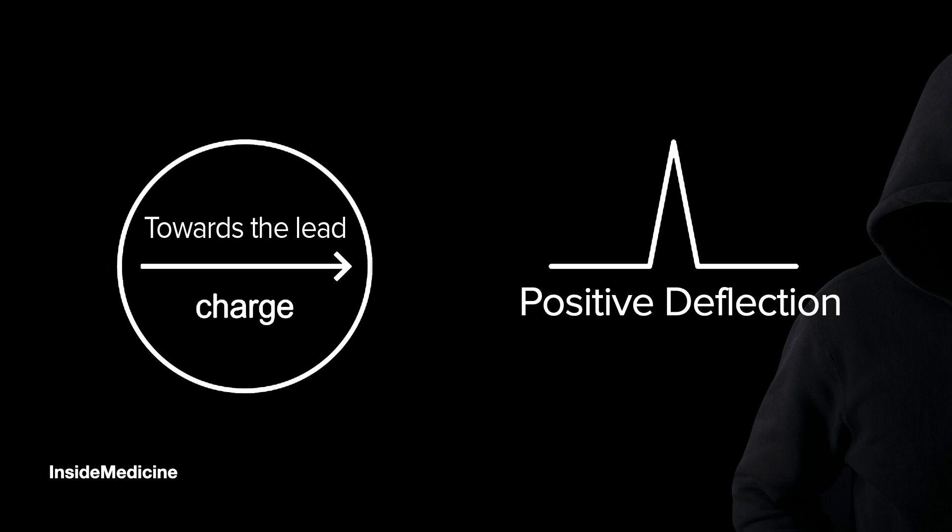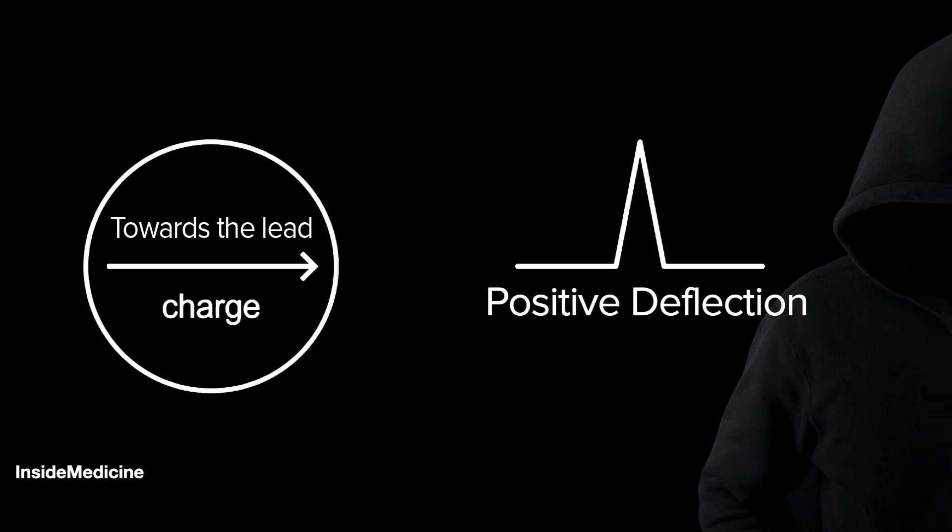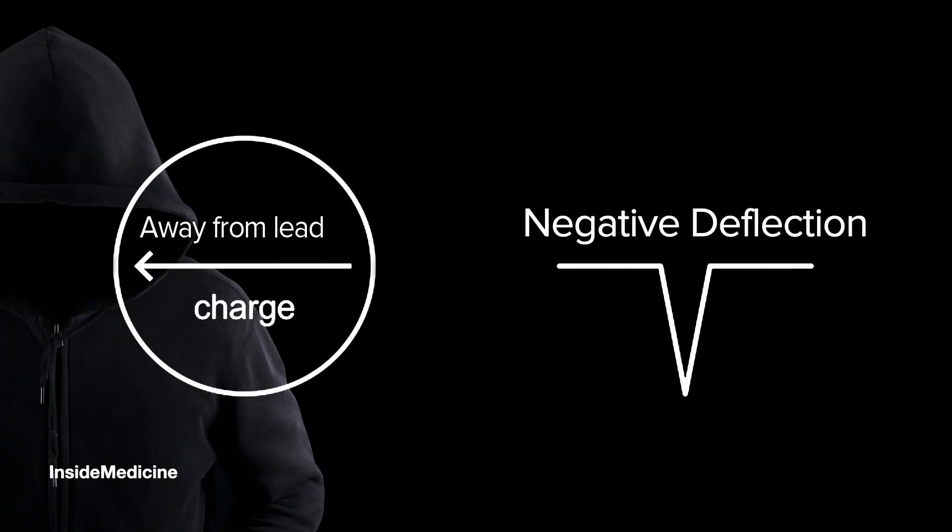We take an ECG by placing electrodes on the body. There are 6 chest leads and 3 limb leads. Whenever charge moves towards a lead, we get a positive deflection. And when it moves away, we see a negative deflection. This concept is central to understanding the ECG.